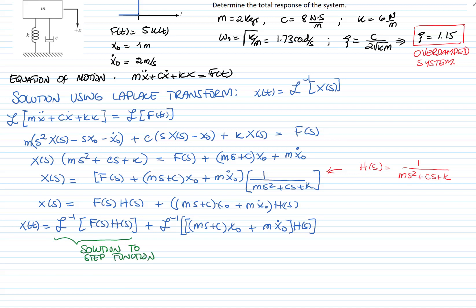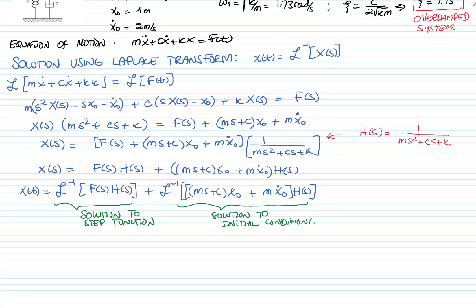Therefore, x in the time domain will be the inverse transform of F(s) times the transfer function, plus the inverse transform of the terms involving the initial conditions. We can find the inverse transform separately for the external force and for the initial conditions.